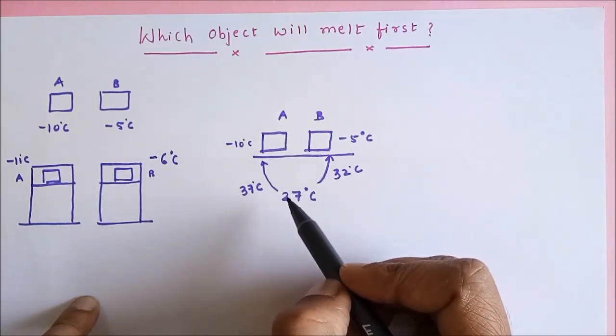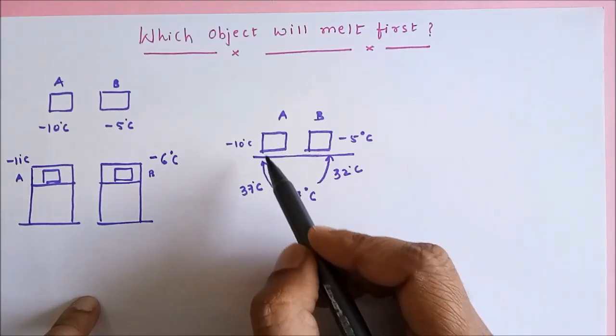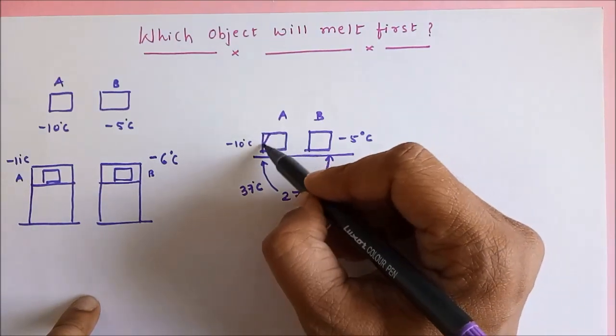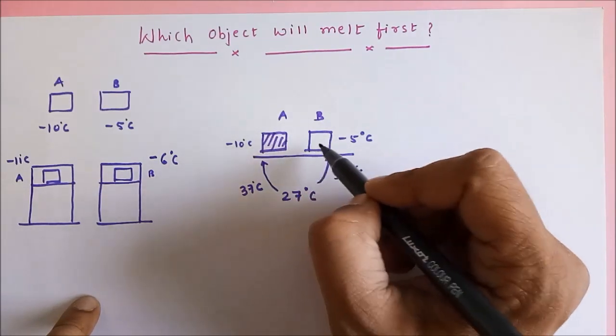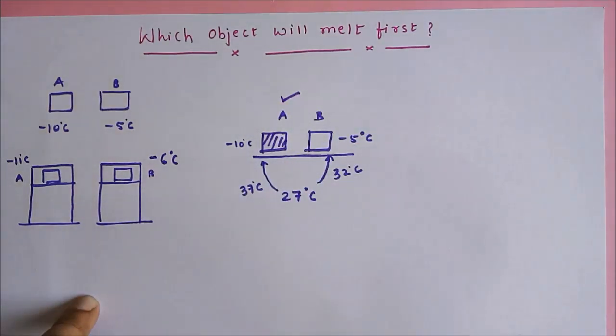Which object will gather the heat energy faster is A, because the difference in temperature is larger. Heat energy always flows from high temperature to low temperature faster if the difference is larger. That means A is going to gather heat required for melting faster compared to B, so A will melt faster compared to B.